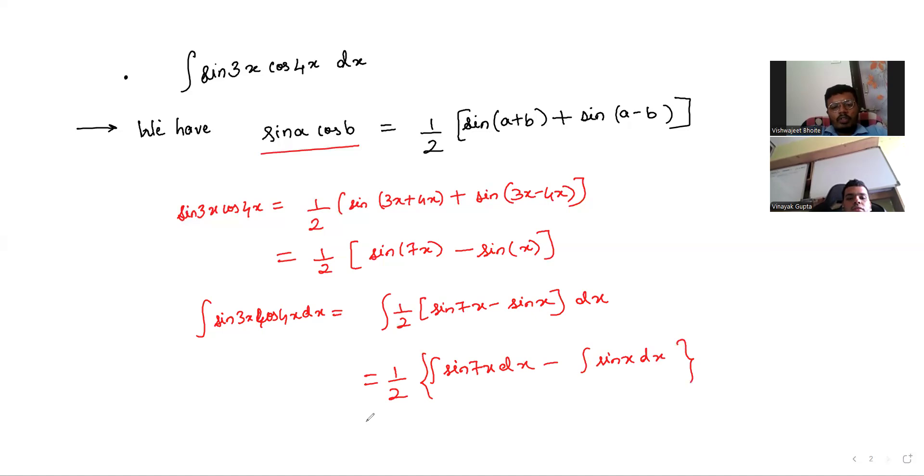Now this is the same as 1/2[integral of sin(7x) is -cos(7x)/7, integral of sin(x) is -cos(x), so minus of minus becomes plus cos(x)] plus C, which is the same as -cos(7x)/14...